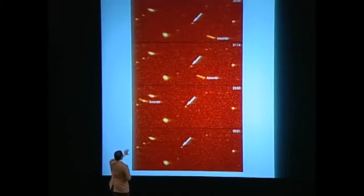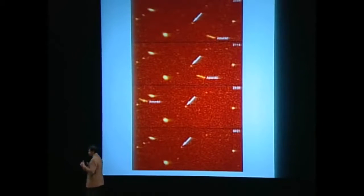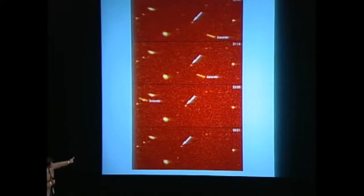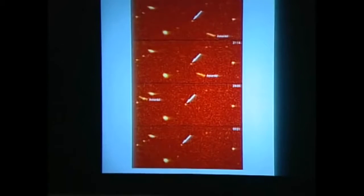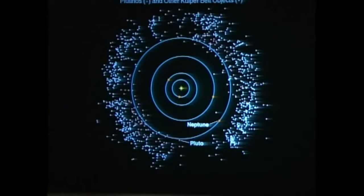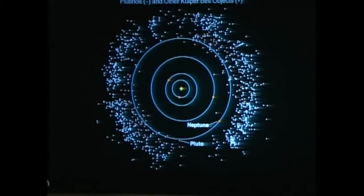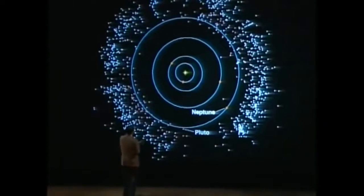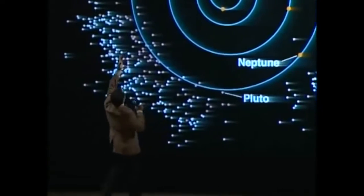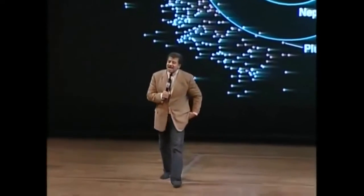It all started with Percival Lowell. He started the search for Planet X that led to the discovery of Pluto. Because he was sure that the orbit of Neptune was not following Newton's laws of gravity, that there was some yet-to-be-discovered planet in the outer solar system tugging on Neptune. He said, find it.